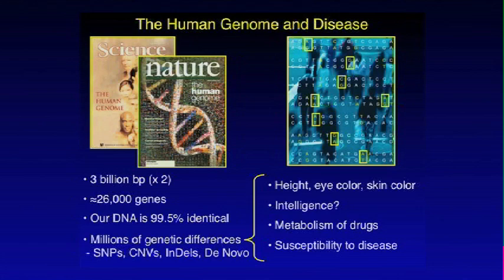The human genome has been sequenced. We know there are about 3 billion base pairs, and since we have two copies of almost every chromosome, there are actually more like 6 billion base pairs of DNA in every cell of our body, with about 26,000 genes. All of our human DNA is about 99.5% identical — we're almost all genetically identical — but that last little bit certainly leaves millions of different genetic variations. These differences in our DNA account for things we're familiar with, like height, eye color, and skin color.